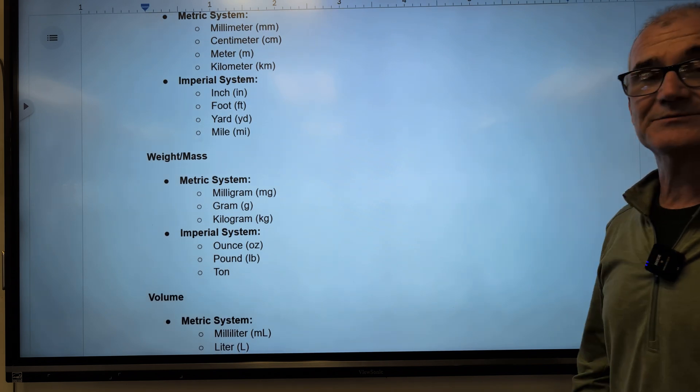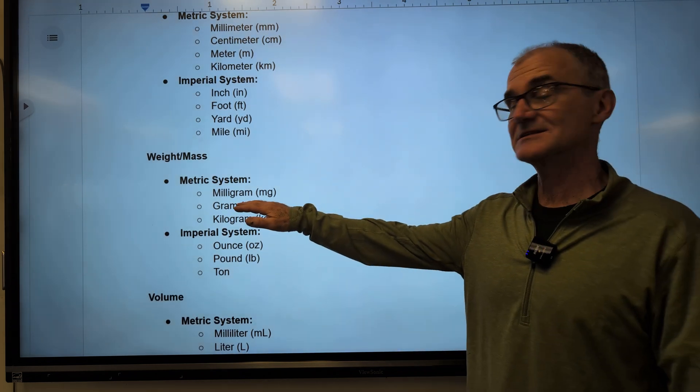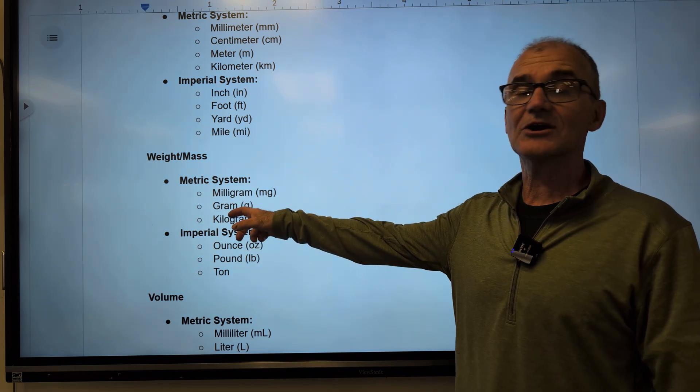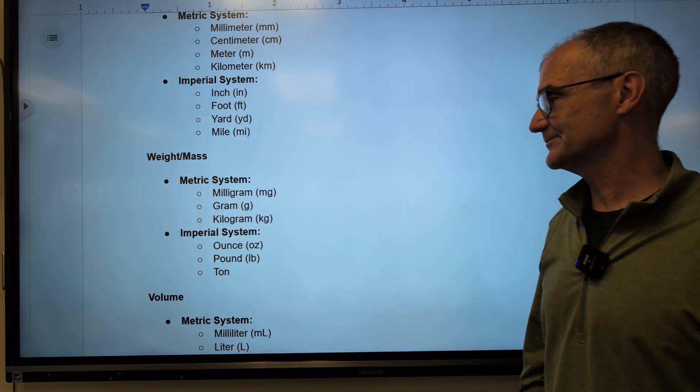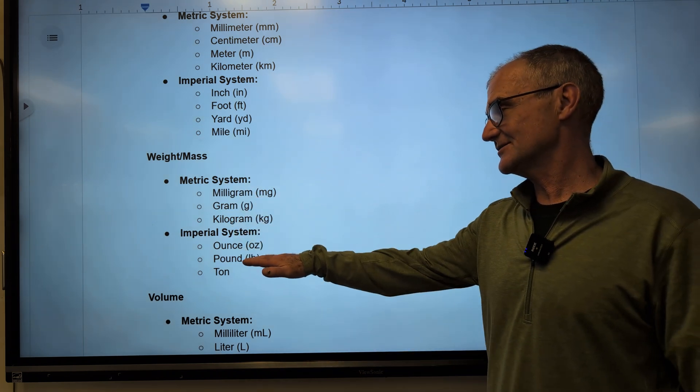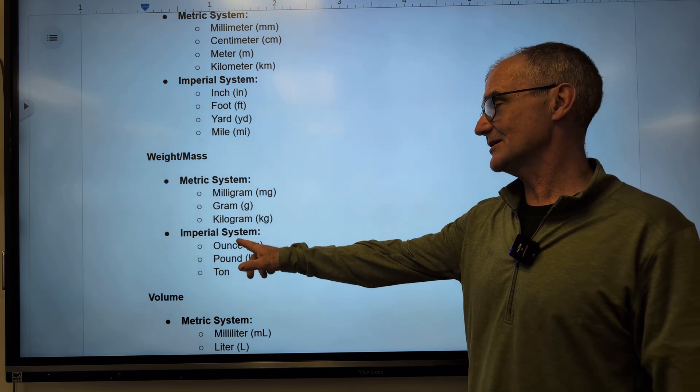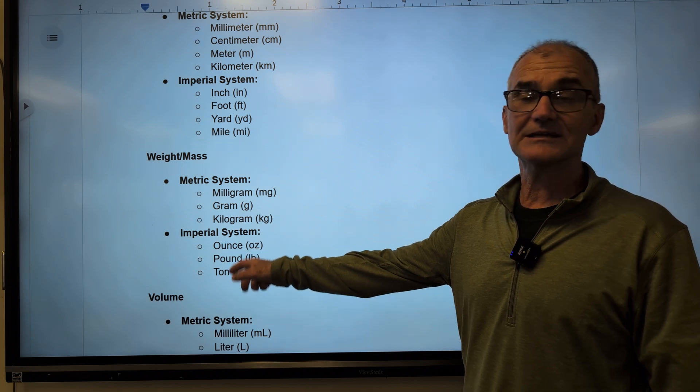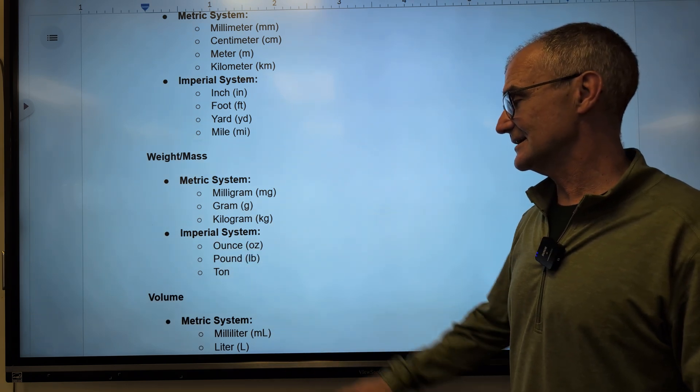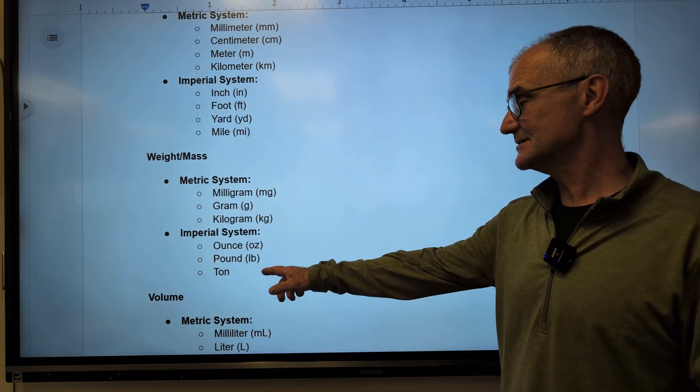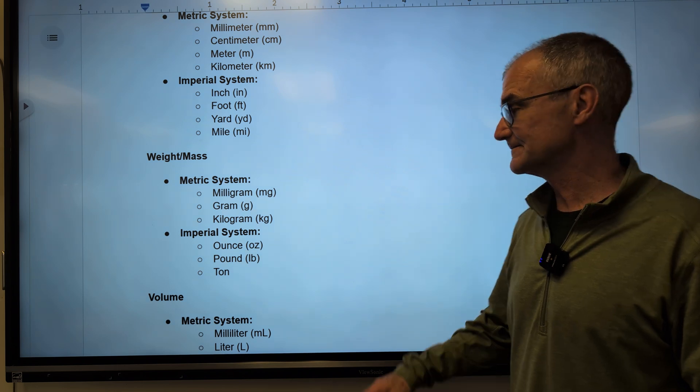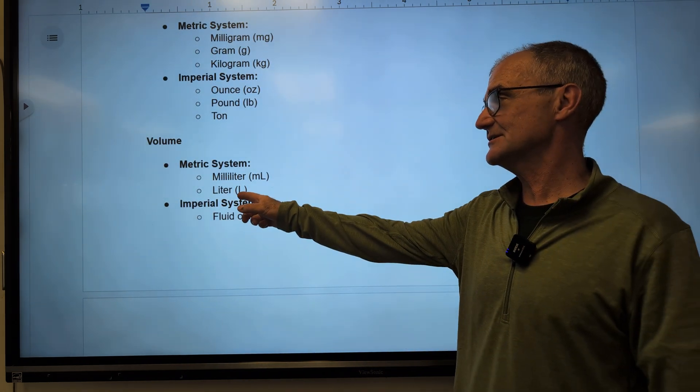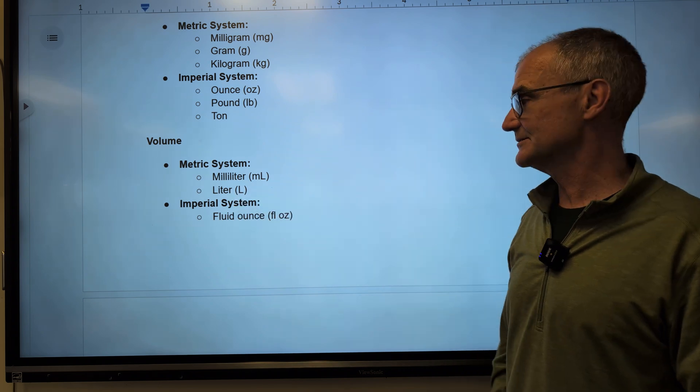In weight, the metric system uses grams as the middle, and then smaller than a gram is a milligram, larger than a gram is a kilogram. And then in our system, pounds, going smaller ounces, 16 ounces to the pound, and getting larger tons. Usually it's 2,000 pounds to the ton. Then in volume, the standard for the metric is liter, getting smaller is a milliliter. And then time, time is going to be the same across both systems.